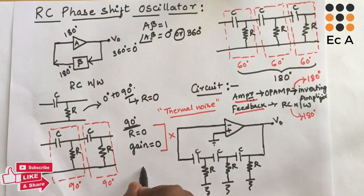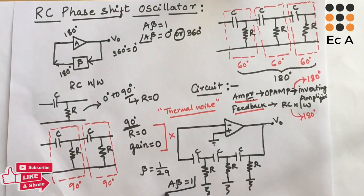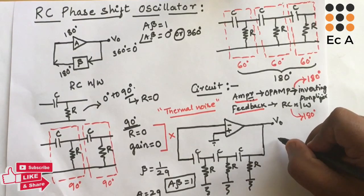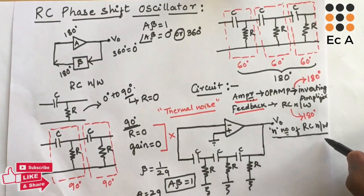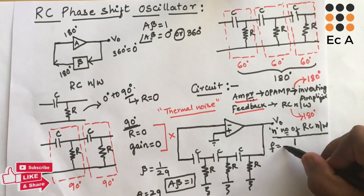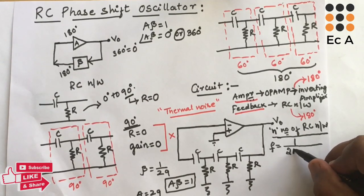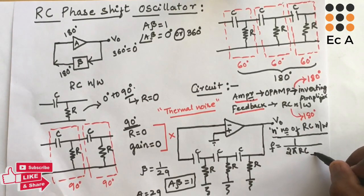In this circuit, resistor values are fixed and capacitor values are varied to get sustained oscillations. For this circuit, β = 1/29, and to satisfy the condition A·β = 1, the amplifier gain A must equal 29. For n number of RC networks, the frequency of oscillation is given by: f = 1 / (2π·R·C·√(2n)).